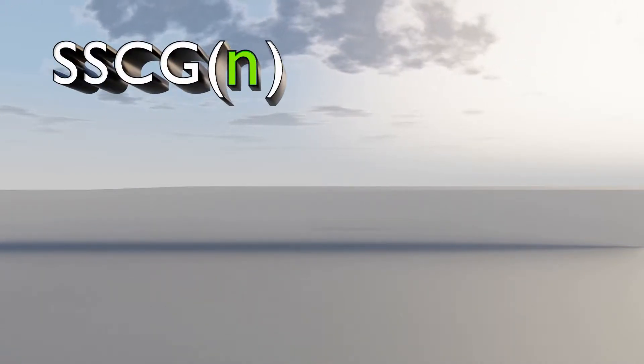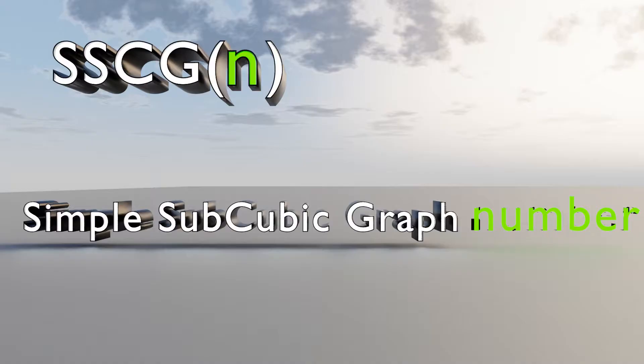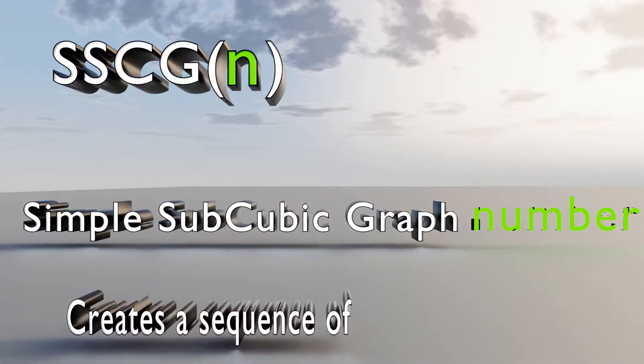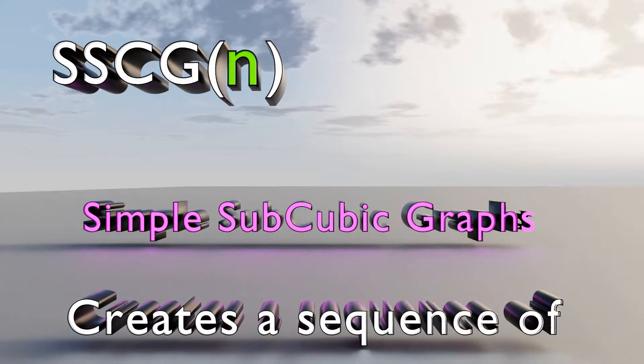SSCGN stands for Simple Subcubic Graph Number. This creates a sequence of simple subcubic graphs.